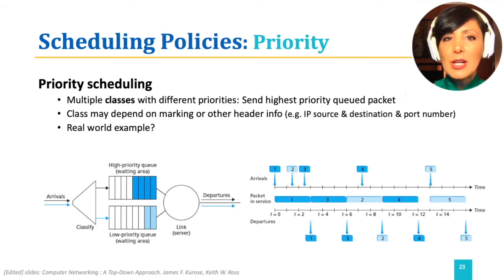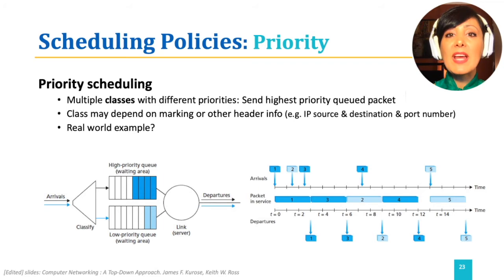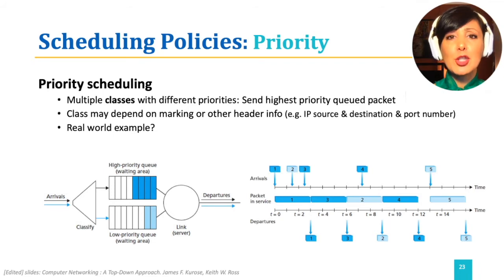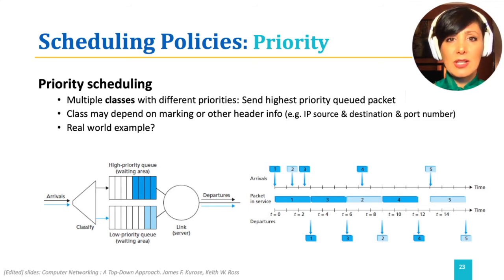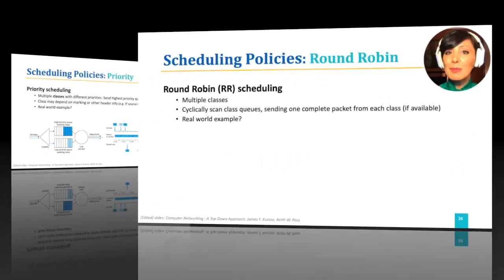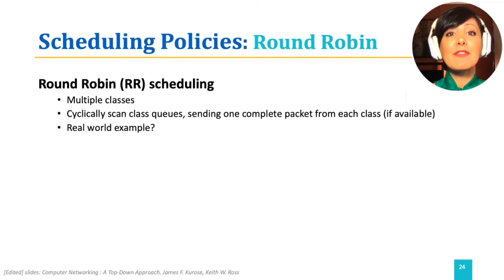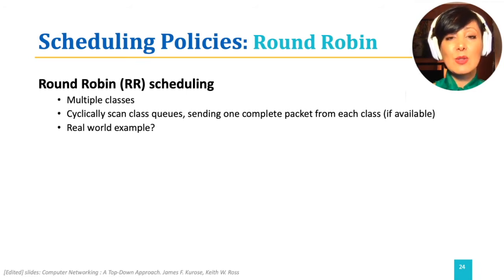If it takes 3 units of time to send out each packet, given the arrivals and priorities, packets 1 and 3 will be scheduled first. Then, because there is no high priority packet, packet 2, which is a low priority packet, could be scheduled. Then packet 4, which arrived after transmission of packet 2 started, followed by packet 5, because at that time there is no priority packet waiting. A problem with priority queuing is that if the arrival rate of high priority packets is high enough, packets on the low priority queue will not get the chance to access the output link.